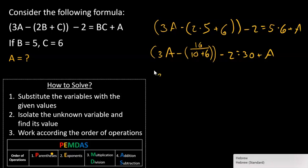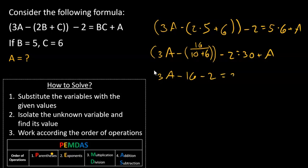Here we're left with 3A minus 16 minus 2 equals 30 plus A. Moving A to the left side, we get 2A minus 18 equals 30.